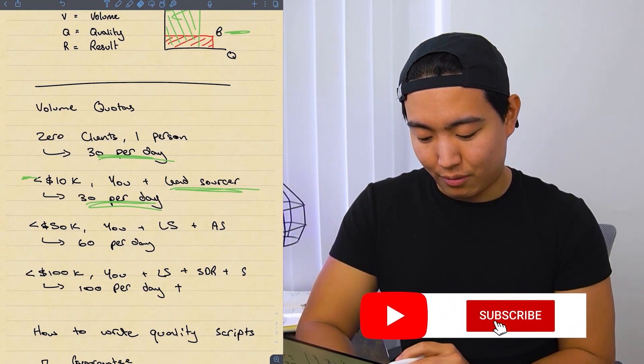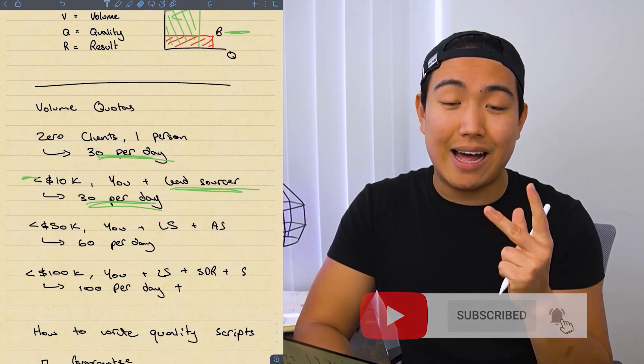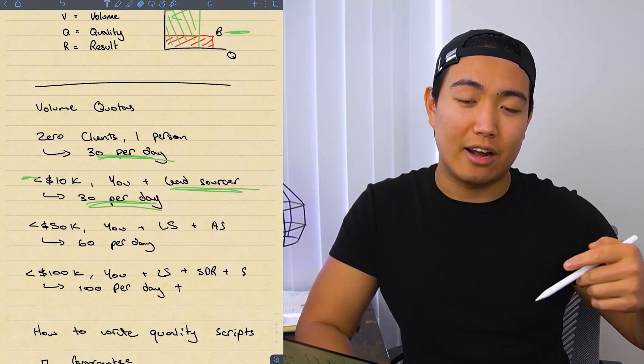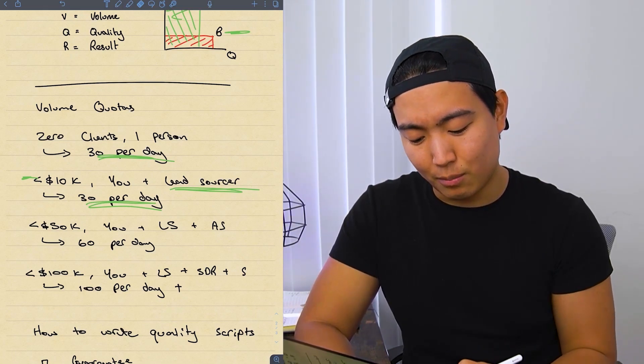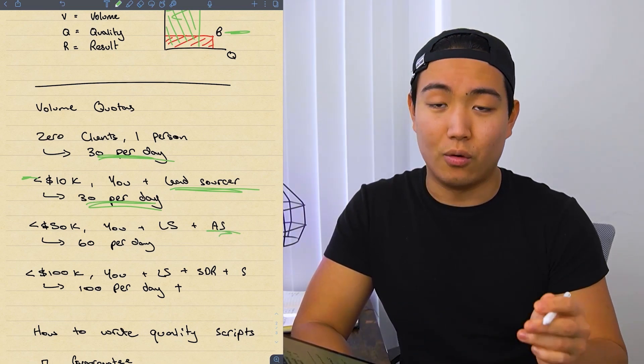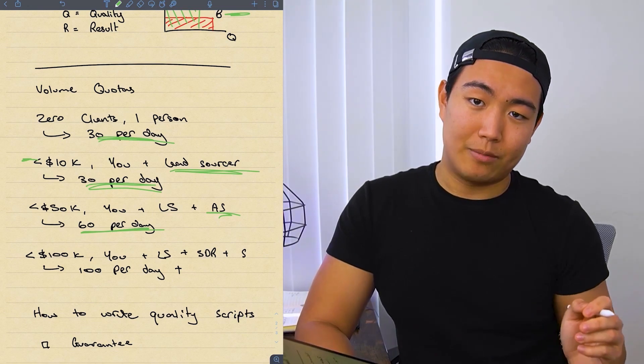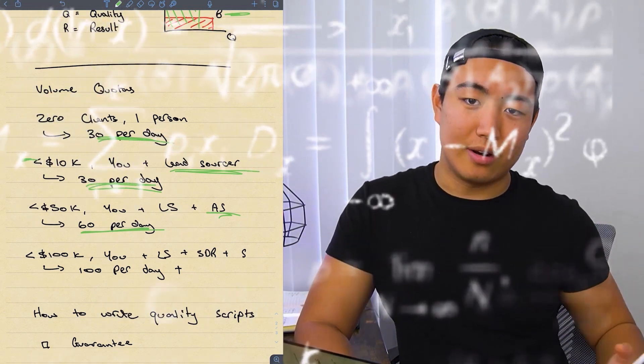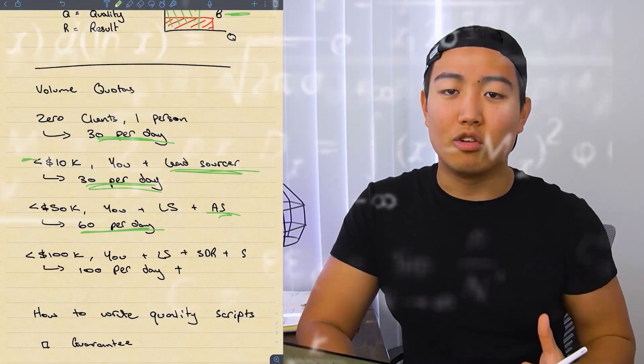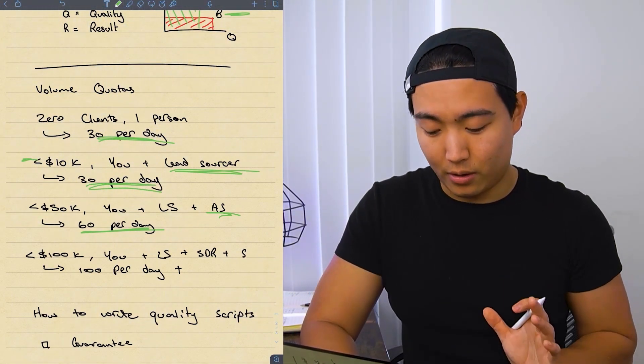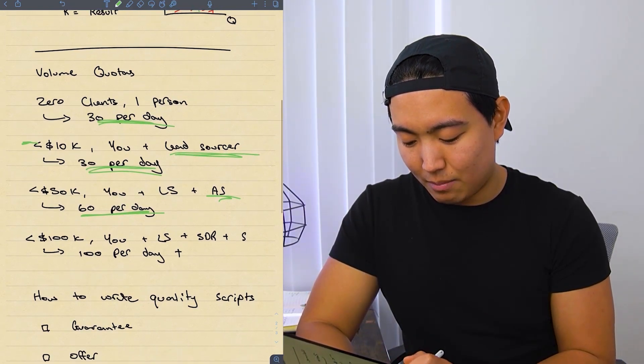If you're below 50,000 a month, you should be working with you, a lead sourcer and an appointment setter handling the replies. At this point, you should be good enough at replying to emails and closing meetings to the point where you can actually hire an appointment setter to do the replies for you and train them up. And at this point, you should be sending 60 a day. So 60 times 5 is 300 a day times 4, which is about a month, which is going to be 1.2k outbound emails every single month.